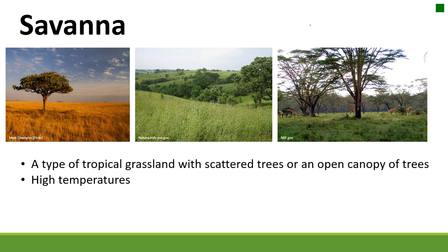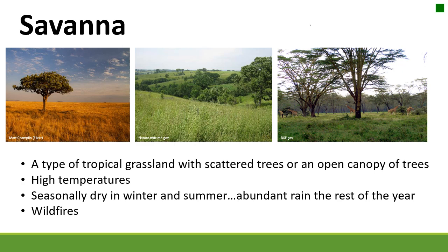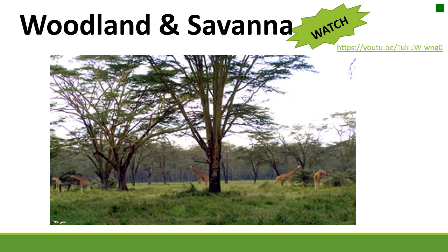Savannas are different from woodlands — they are typically tropical grasslands with scattered trees or an open canopy of trees. They're often a transition zone between forests and deserts and can be found in a wide belt along the equator just beyond the tropical rainforests. Characteristics of a savanna include high temperatures, seasonally dry winters and summers, and abundant rain the rest of the year. This creates conditions for intense wildfires during the dry season, which are important because they maintain grasses in the understory while tall trees survive the cool ground fires, essentially keeping trees and grasses but eliminating shrubs.